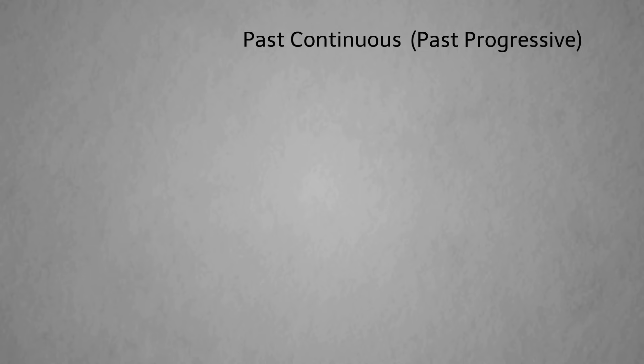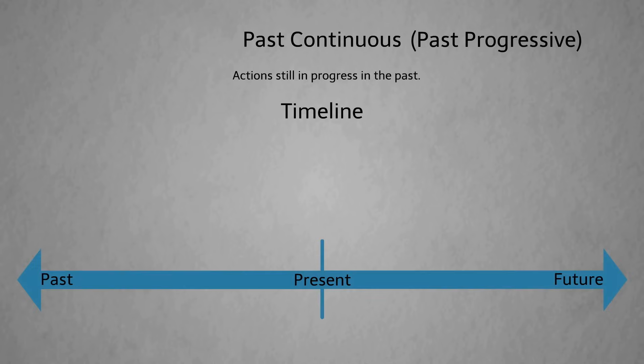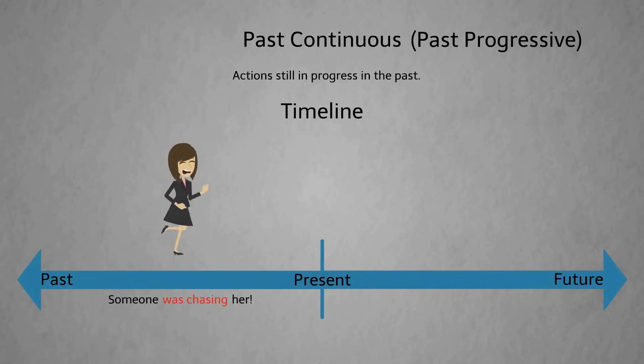In this video, we'll look at the past continuous — you may also know this as the past progressive. We use the past continuous to talk about an action in progress in the past. Let's examine this using a timeline with the example: someone was chasing her.